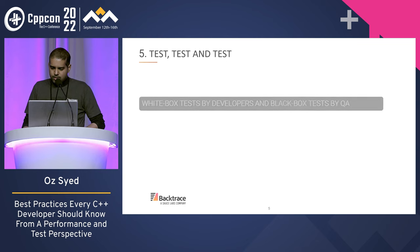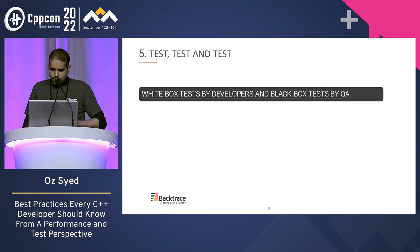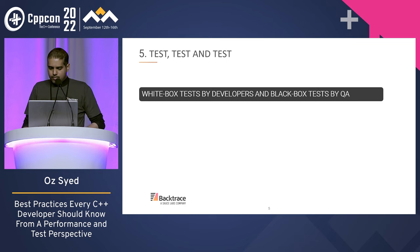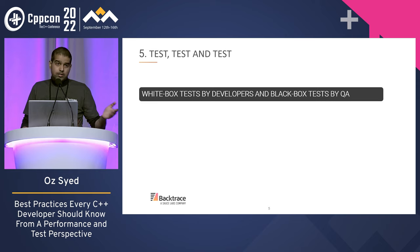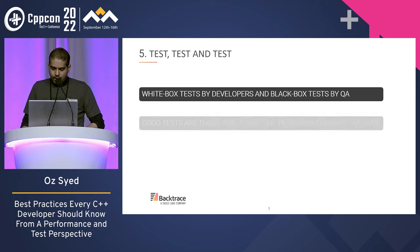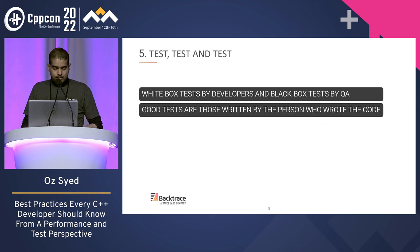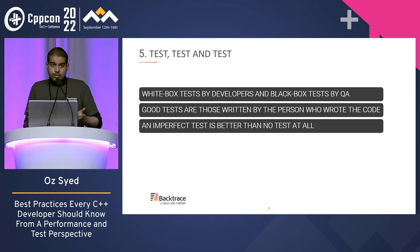Good white box tests are those that are written by the person who wrote the code. This is because that person would possibly know what can go wrong within the system architecture and ensure that the tests are developed to detect and report such malfunctions. And having said that, an imperfect test is still better than no test at all.